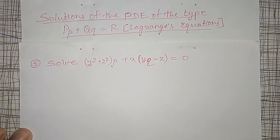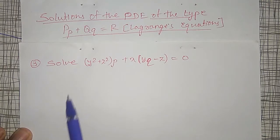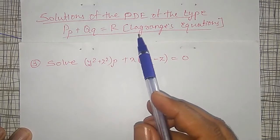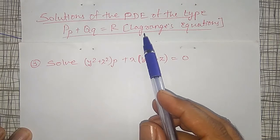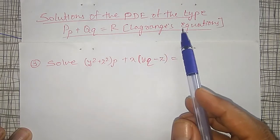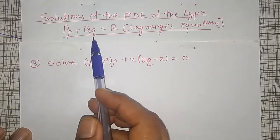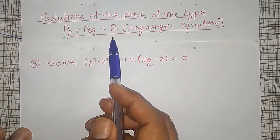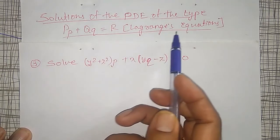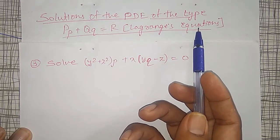Welcome friends. Today I will solve some more examples on the solution of partial differential equations of the type pp plus qq equal to r, known as Lagrange's equations.